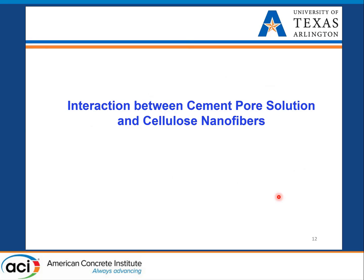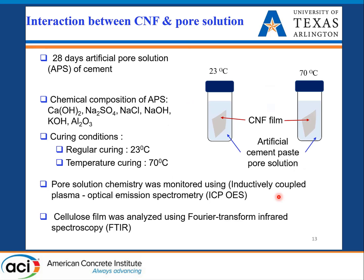The next topic is the interaction between cement pore solution and cellulose nanofiber. Cellulose is biodegradable, so if you put this fiber in a highly alkaline solution similar to cement pore solution, it is expected to start degrading. We performed simple batch experiments using artificial cement pore solution, placing thin films of cellulose nanofibers in that solution and monitoring changes in both the liquid and solid phases for up to 120 days at 23°C and 70°C. Liquid chemistry was monitored using ICP, and solid changes using FTIR and X-ray diffraction.